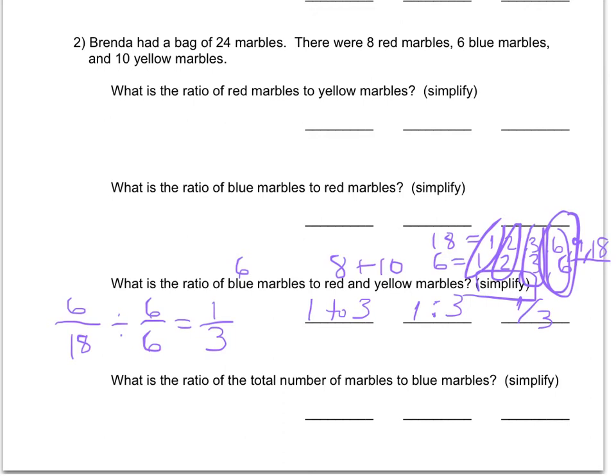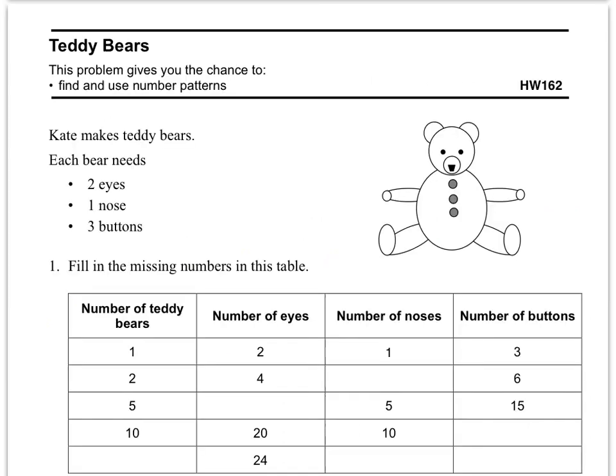That's exactly what you do on this side. On the backside we'll go ahead and move on over there. Kate makes teddy bears. Each bear needs 2 eyes, 1 nose, 3 buttons.